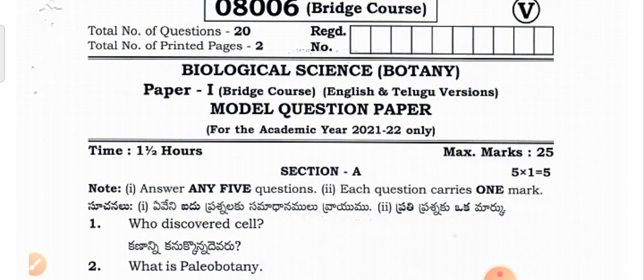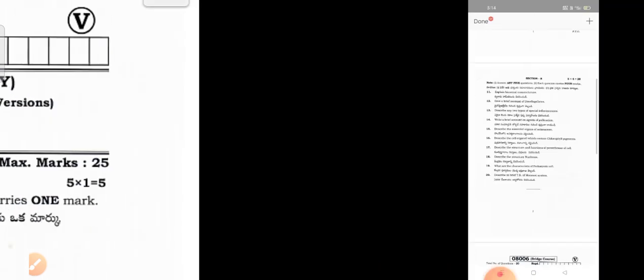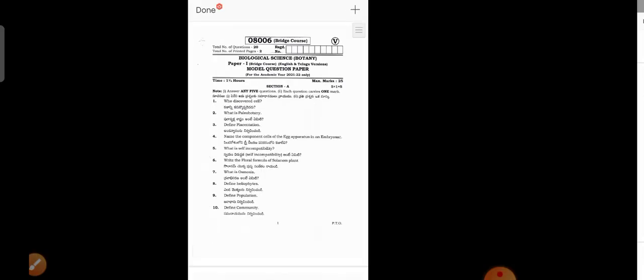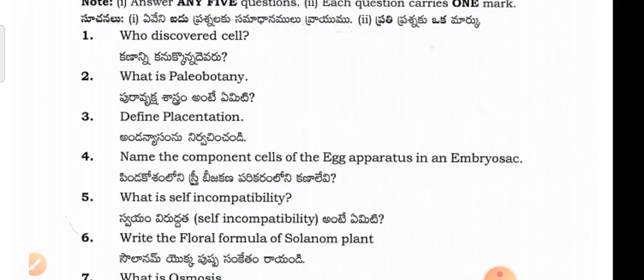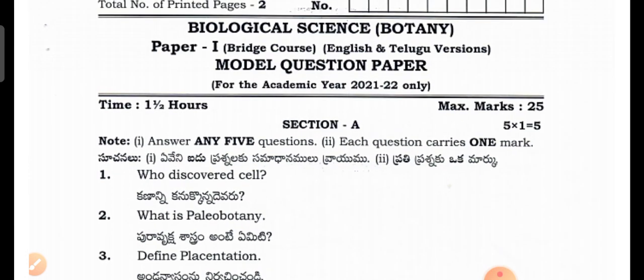So there are a lot of questions about YPC and MPC. They are all the same in the bridge course — the question papers are the same. The physical sciences paper covers physics and chemistry. Physical sciences 1 is for first year and physical sciences 2 is for second year.